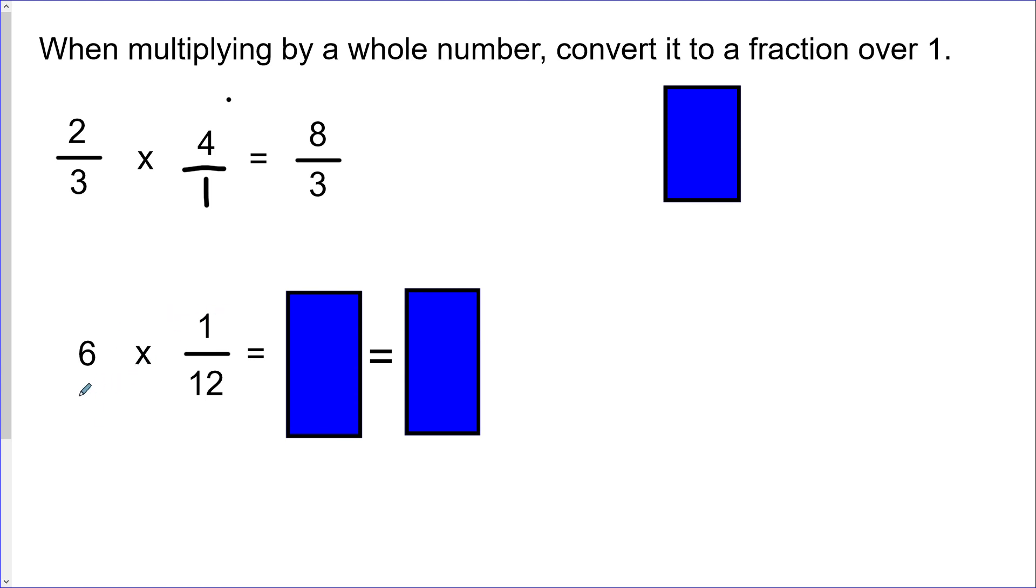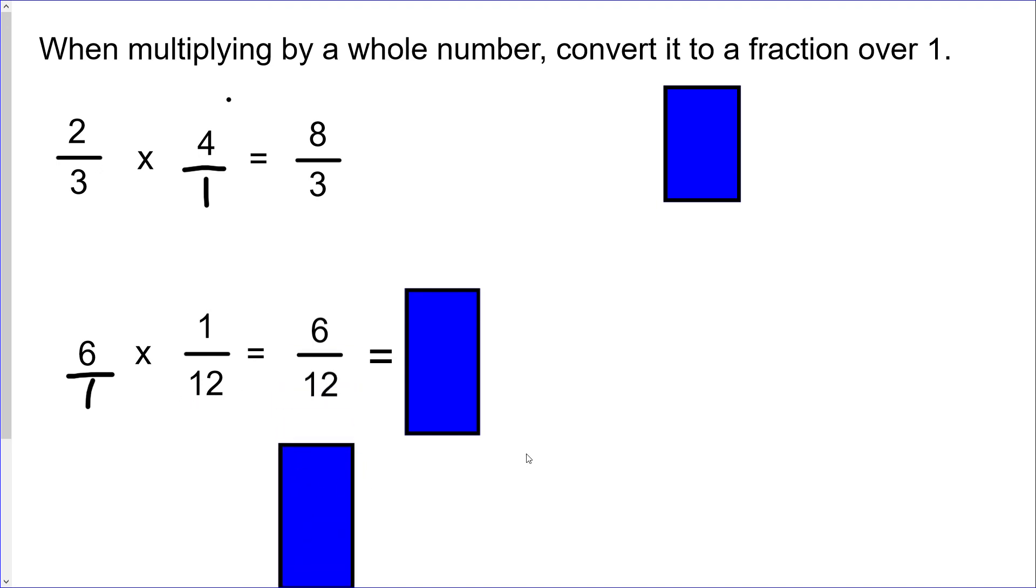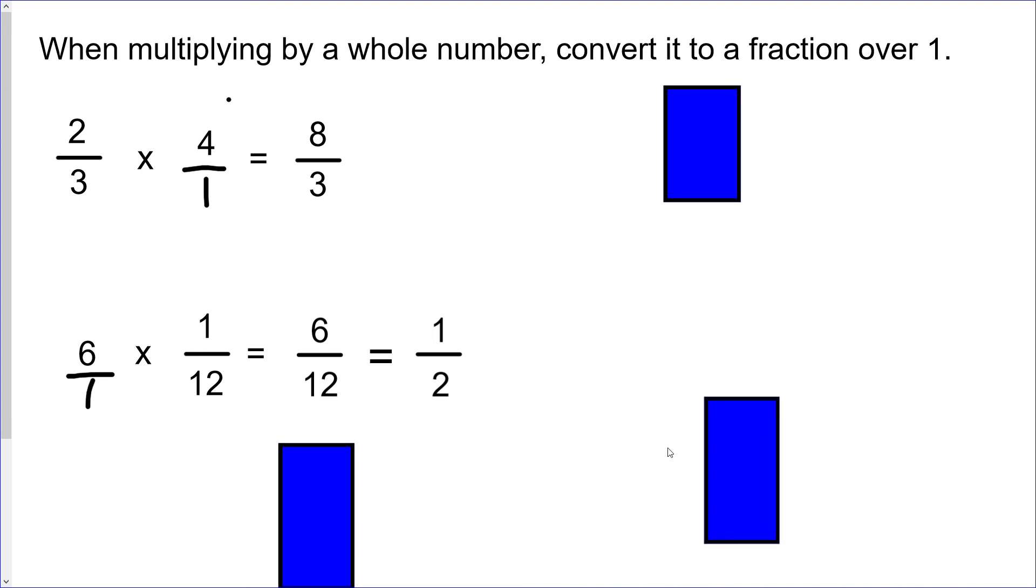Same thing with this example down here. We are just writing, so six times one twelfth equals six over one, and then you just do the straightforward multiplication. Six times one will equal six on the top, one times 12, 12 on the bottom. Now in this case you can actually reduce that to lowest terms, and that can reduce down to one half and then you'd want to leave that as your final answer.